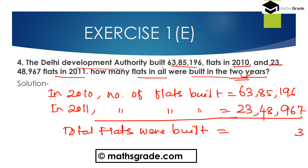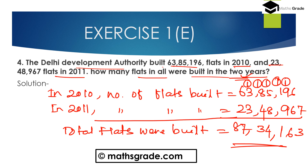Calculating: 6 plus 7 is 13, carry 1; 1 plus 9 is 10, 10 plus 6 is 16, carry 1; 2 plus 9 is 11; 1 plus 5 is 6, 6 plus 8 is 14, carry 1; 1 plus 8 is 9, 9 plus 4 is 13; carry 1, 1 plus 3 is 4, 4 plus 3 is 7; 6 plus 2 is 8. So the total flats built in these 2 years is 87,34,163.